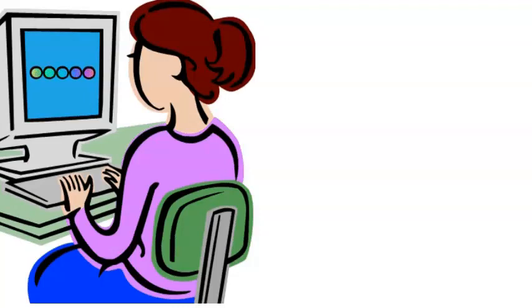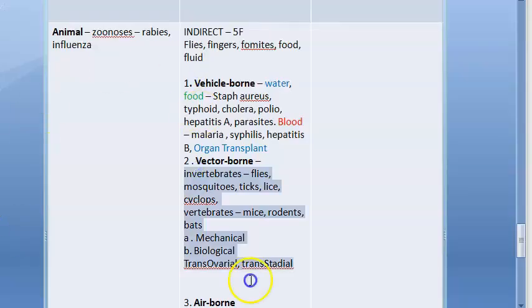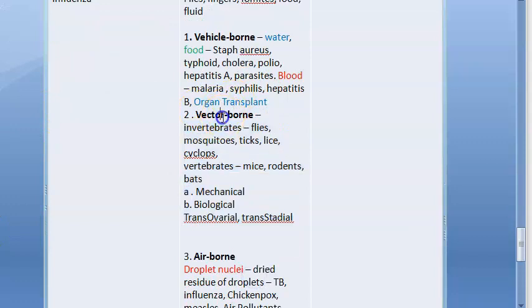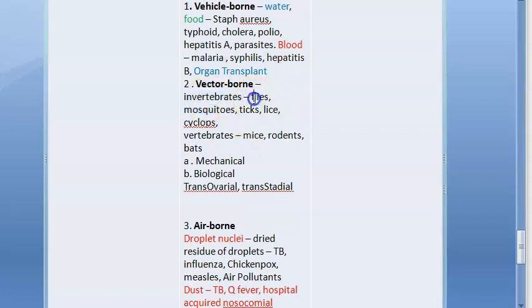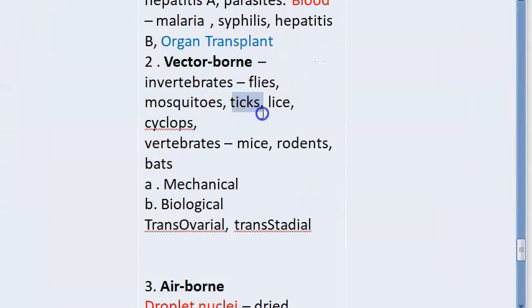In vector-borne transmission, you have flies, mosquitoes, ticks, lice, and cyclops - these are invertebrates or insects. Flies transmit diarrheal diseases. Anopheles mosquitoes transmit malaria, Aedes transmit dengue, Culex transmit filariasis. Ticks transmit Kasauli forest disease and tick typhus. Lice transmit pediculosis. Cyclops transmit dracunculiasis, the guinea worm.